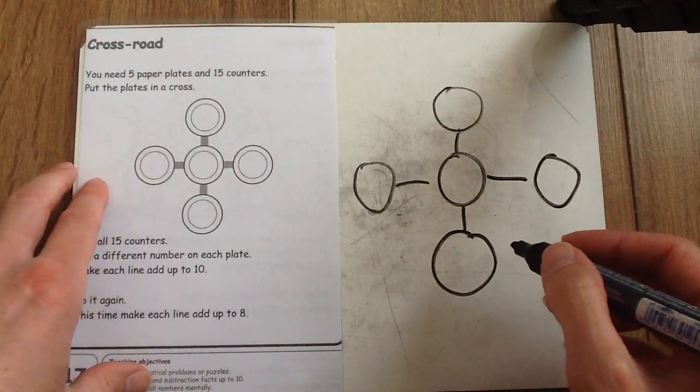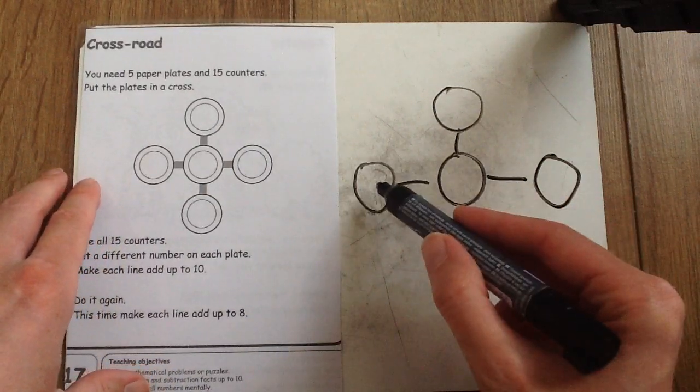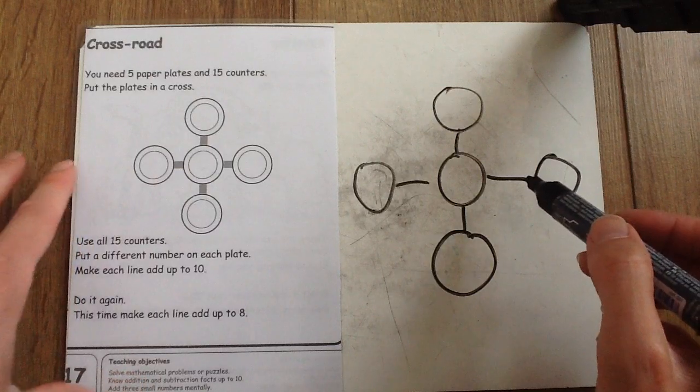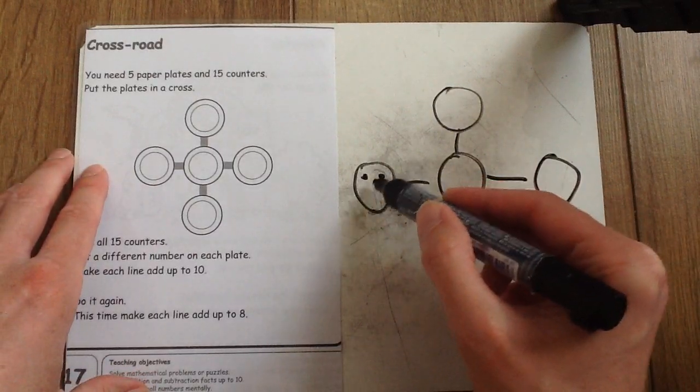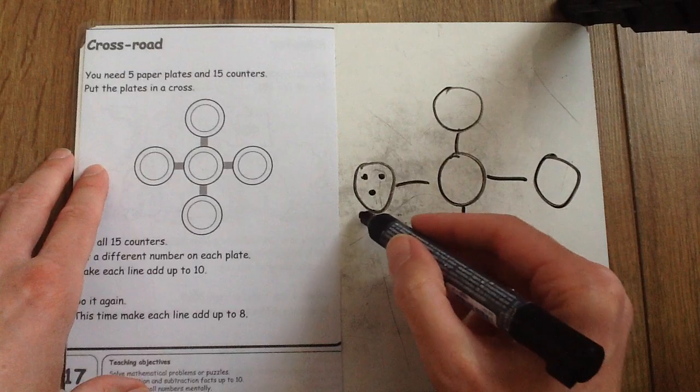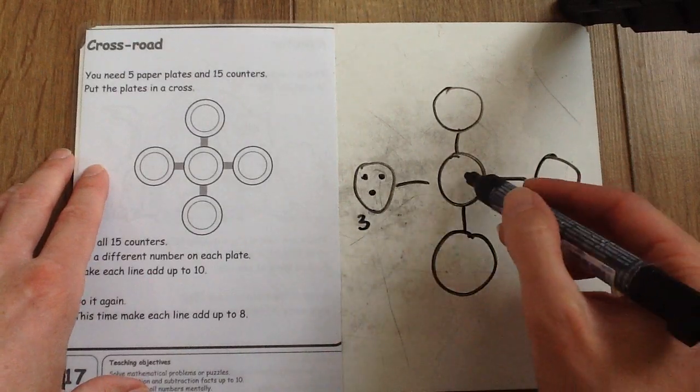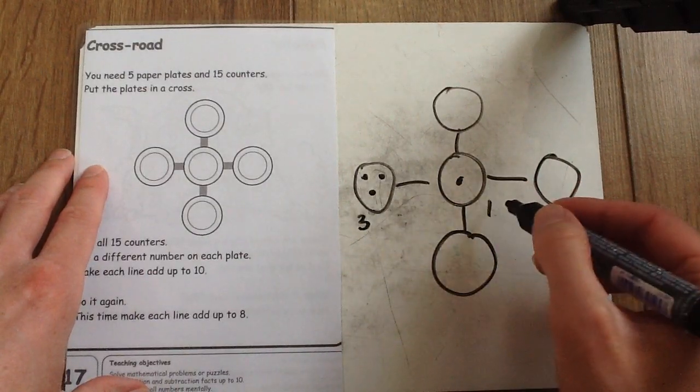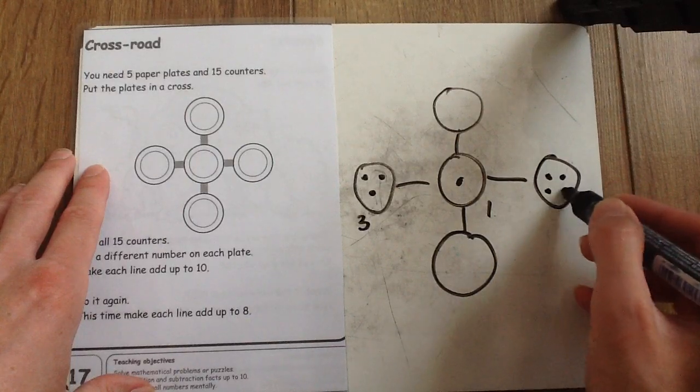Same number of counters but this time each line must only add up to 8. So I'm going to put 3 counters in that circle. Just 1 in the middle this time and 4 on the outside one.